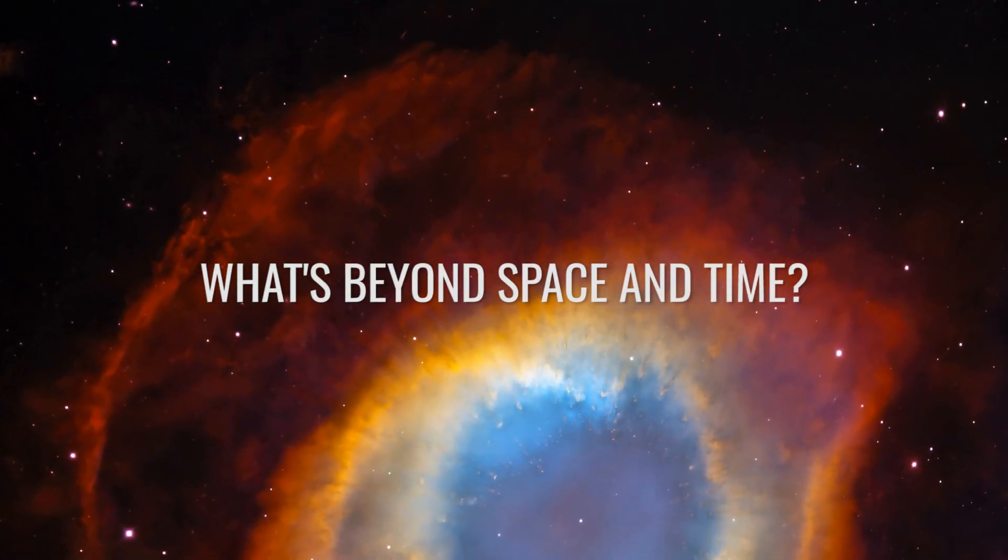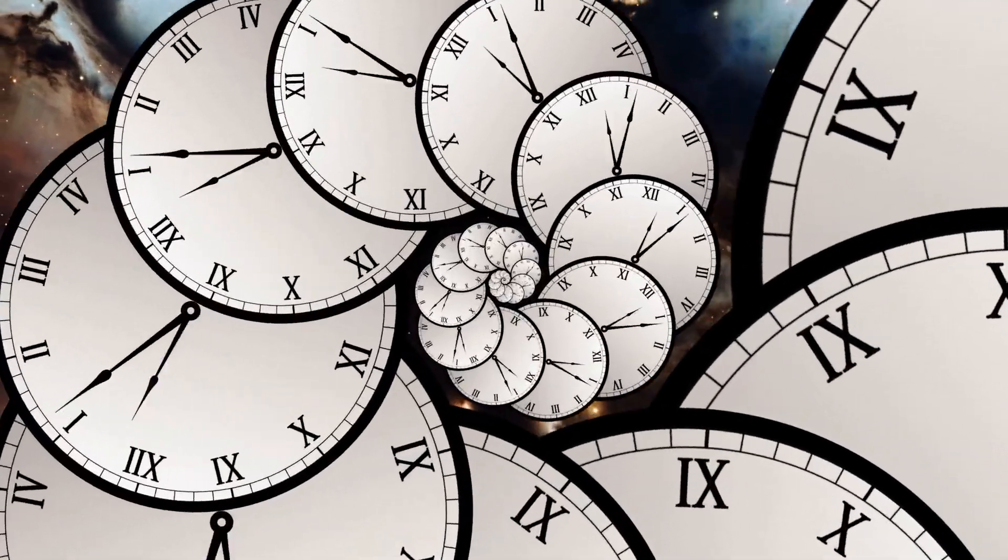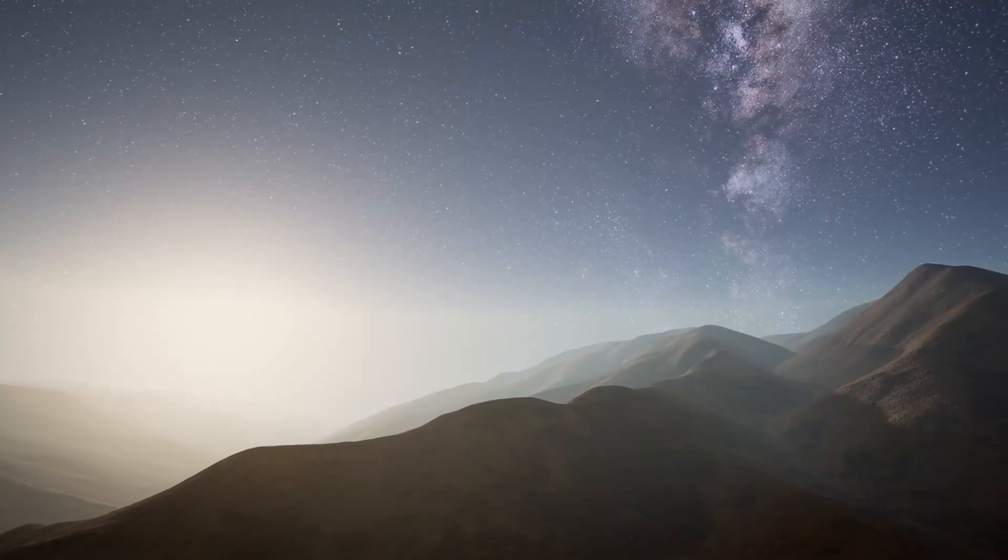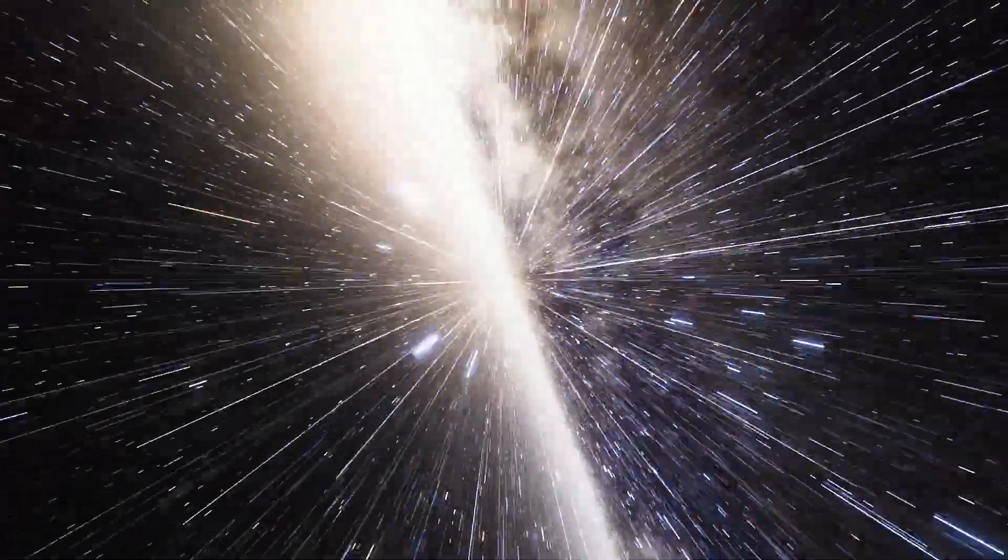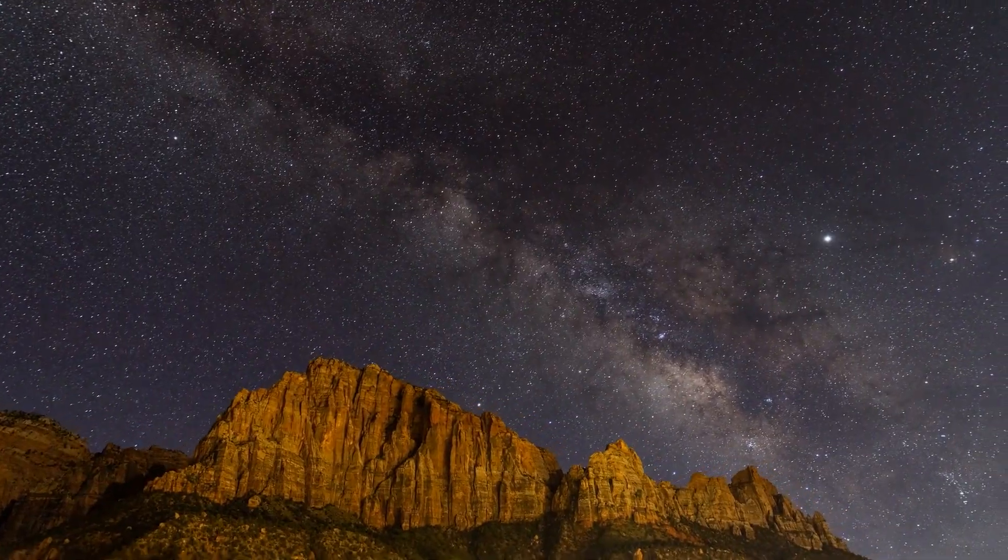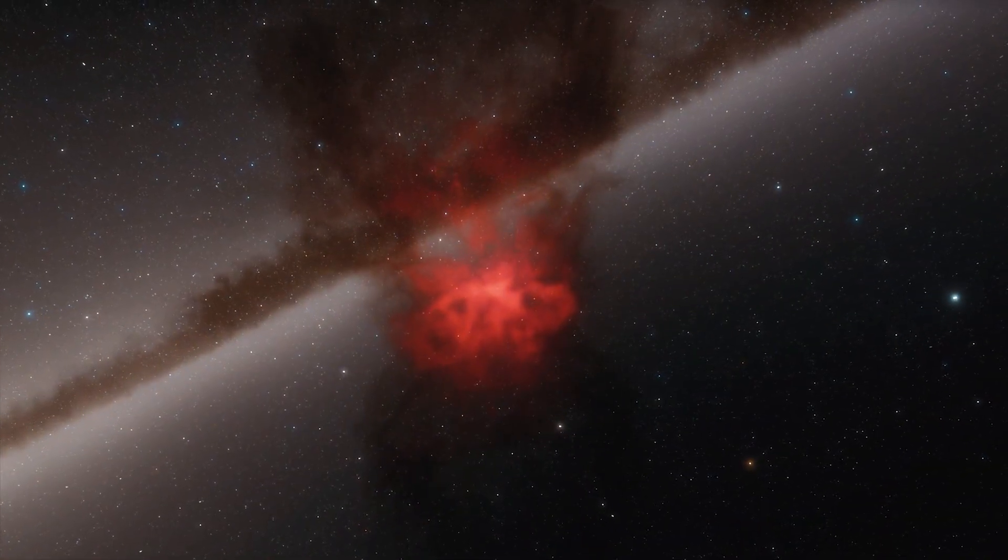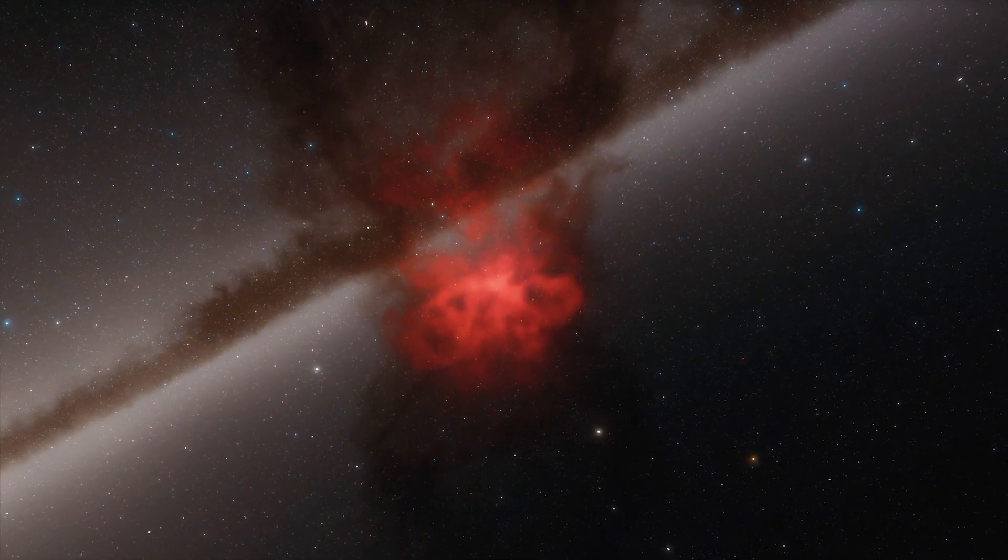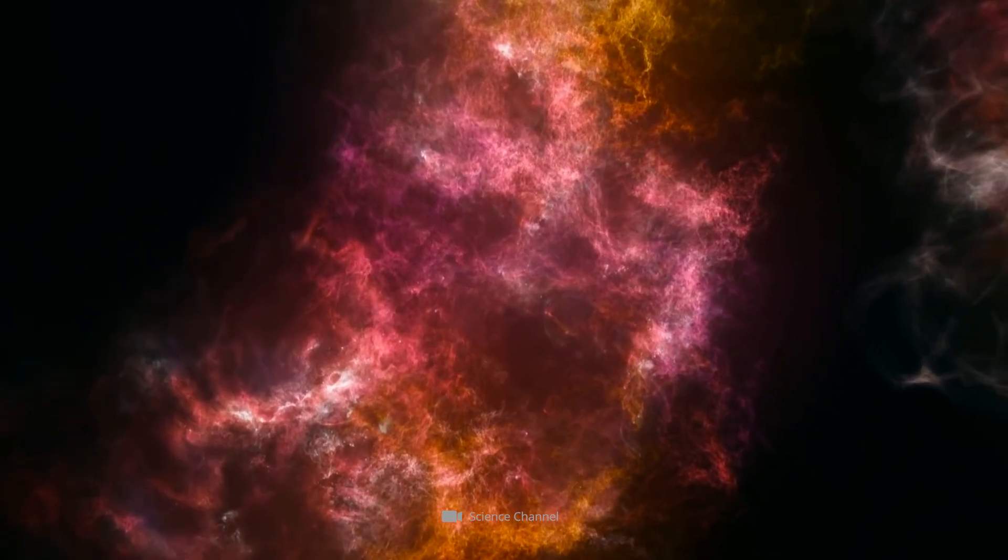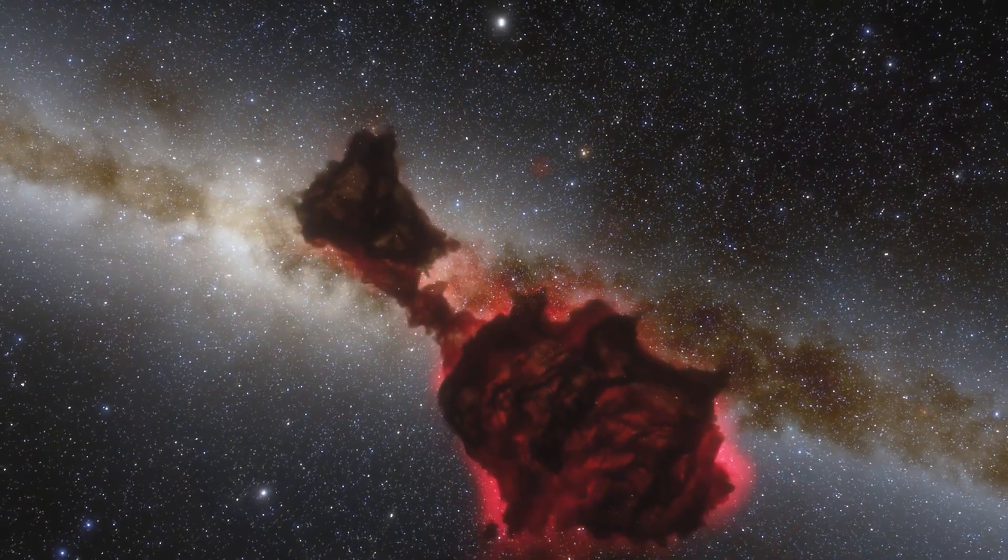What's beyond space and time? It wasn't that long ago that we thought space and time were the absolute and unchanging framework of the universe. Then came Albert Einstein, who showed that different observers can disagree about the length of objects and the timing of events. His theory of relativity united space and time into one space-time. Space alone and time alone are henceforth doomed to fade into mere shadows, explained the mathematician Hermann Minkowski. Only some kind of unification of the two will preserve an independent reality.